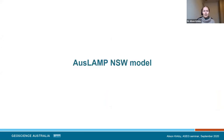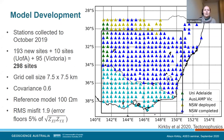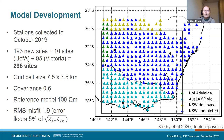Moving on to the model. We're incorporating sites collected up until October 2019 — 193 new sites in New South Wales, 10 sites on the border, and 95 in Victoria, totalling 298 sites with a grid cell size of 7.5 by 7.5 kilometres. For those familiar with MT inversions, we used a covariance of 0.6 and a reference model of 100 ohm metres. We were able to fit the data pretty well — RMS misfit of 1.9 with error floors of 5% of the off-diagonal components.